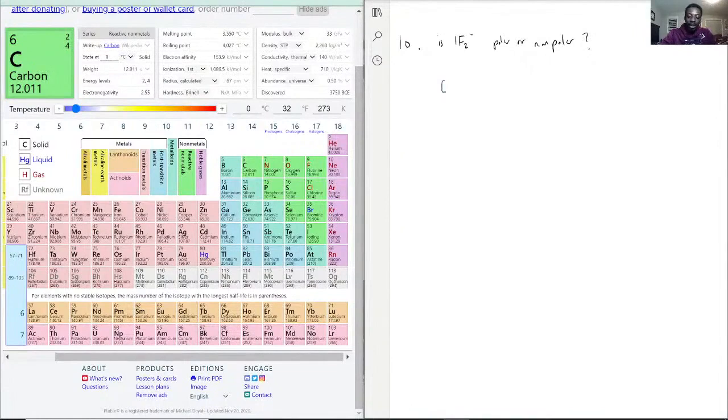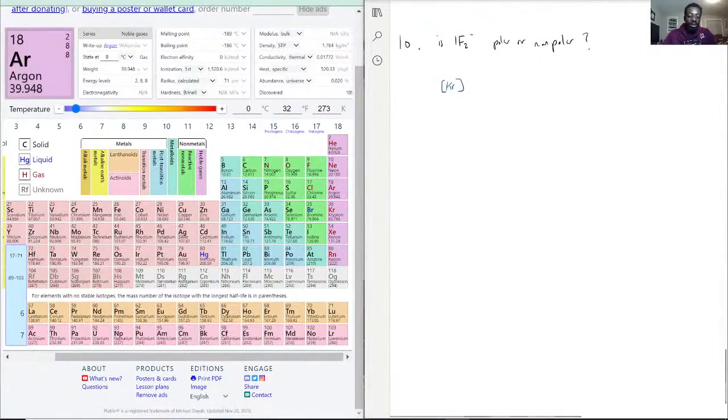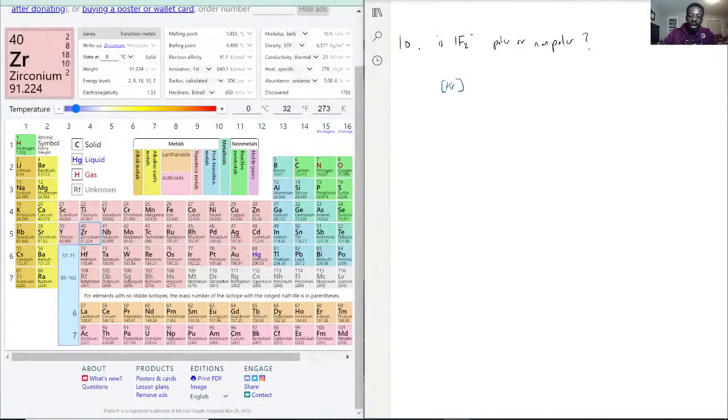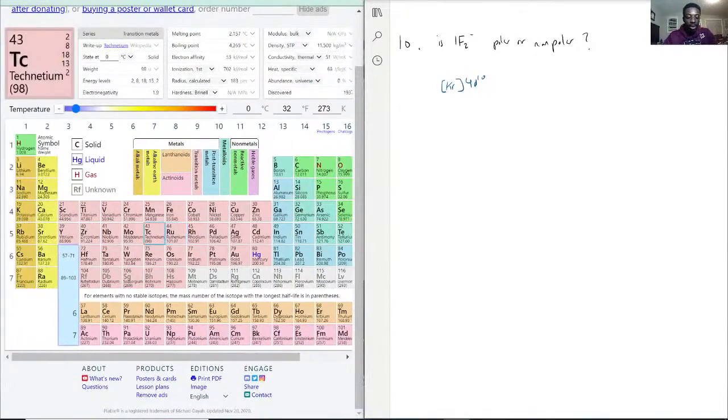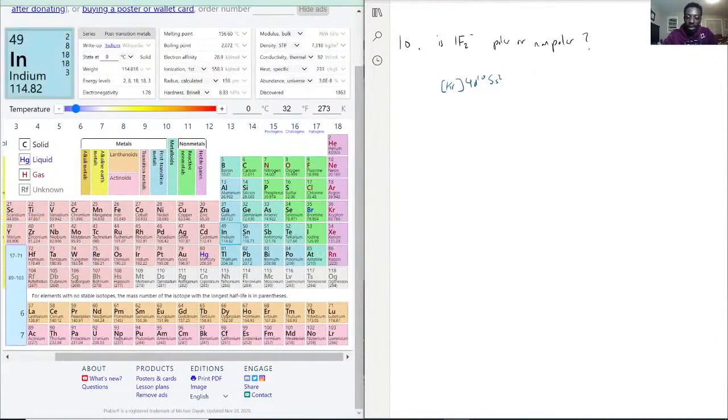We start at the most recent noble gas, krypton, then we go on to the actual rest of it. We have 4d10 because I know that you have to pass through d levels first, so I'm just going to label that first, and then we have 5s2 and then we have 5p5. Looking at the 5 specifically, you will see that 2 plus 5 equals 7, aka how iodine has 7 electrons.